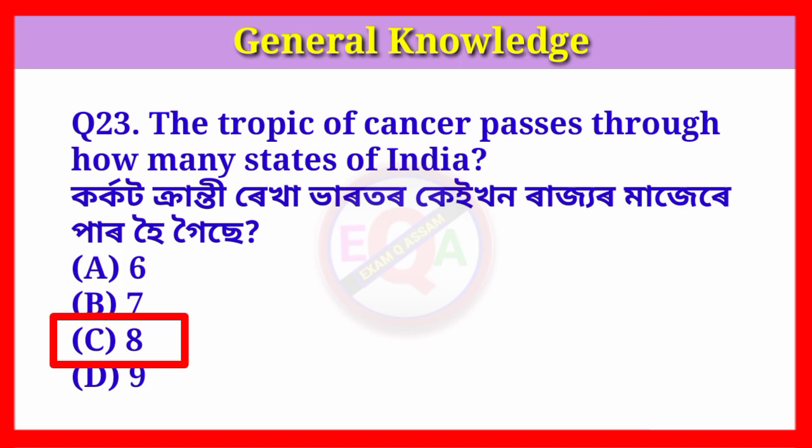The eight states through which the Tropic of Cancer passes are: Rajasthan, Gujarat, Madhya Pradesh, Chhattisgarh, Jharkhand, West Bengal, Tripura, and Mizoram.